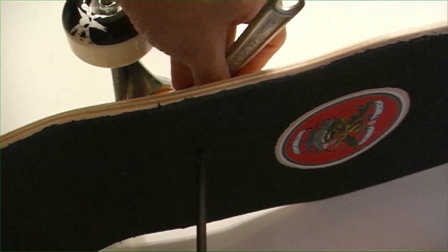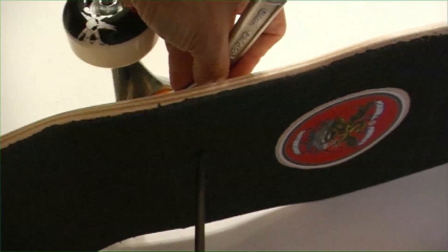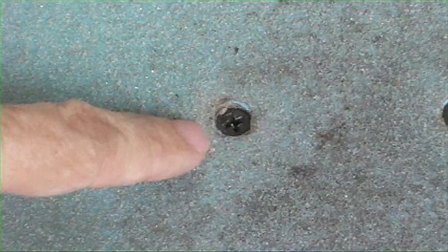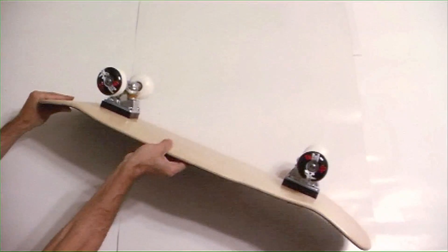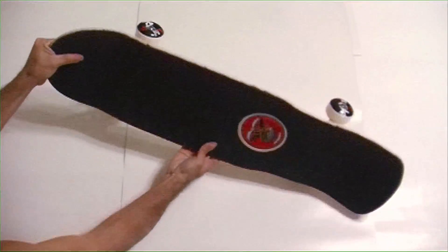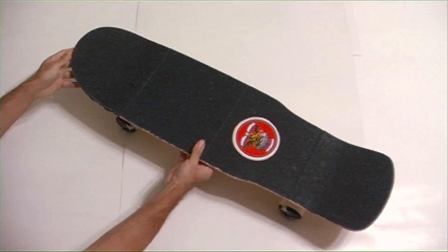Now make sure that when you're tightening your trucks down that you don't tighten them too much because if you do you can do something like this where you can actually start to pull the head of the screw into the wood of the board. You want it to be like that you want it to be nice and flush with the top you don't want to kind of rip it through the deck. Once you're done there you go congratulations you have a fully assembled skateboard.